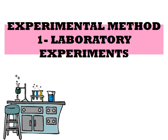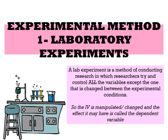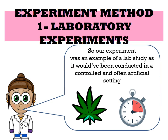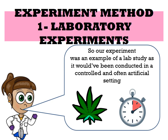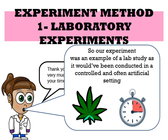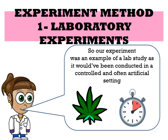One type of experimental method is a lab experiment. A lab experiment is a method of conducting research in which researchers try to control all of the variables except the one being changed between the experimental conditions. The IV is manipulated and changed, and the effect it may have is measured as the dependent variable. The marijuana and reaction time experiment is an example of a lab study — it was highly controlled and in an artificial setting.